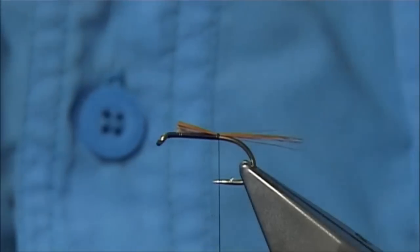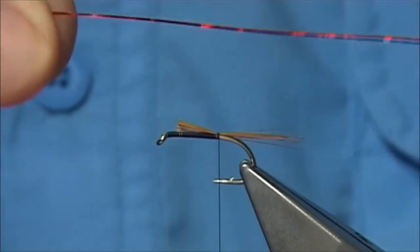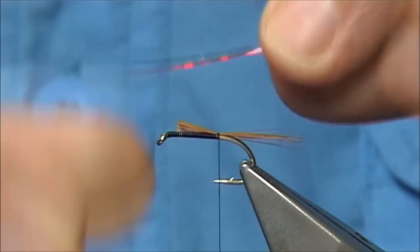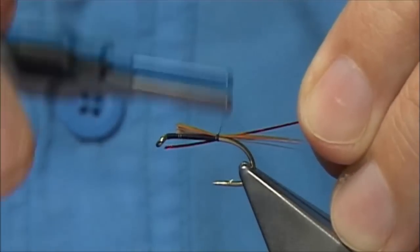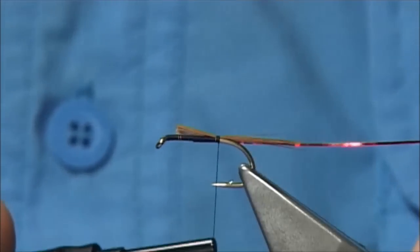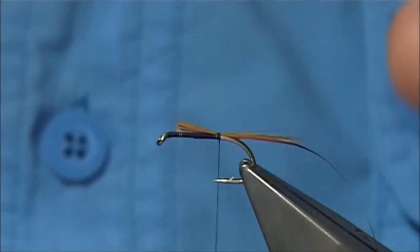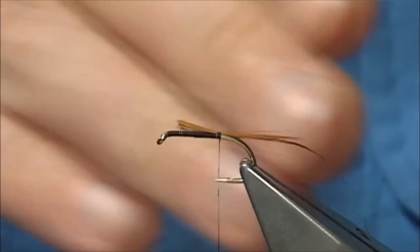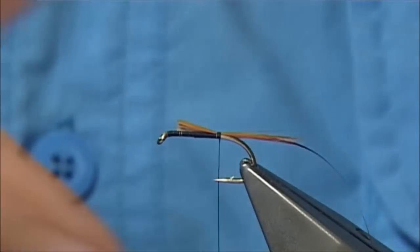Tie in your rib. The rib's going to be a small red holographic tinsel, UTC or whatever one you can get. Again this is the full length of the body. And a turn down, so when you go to wind your rib up, it starts from the beginning of the body.